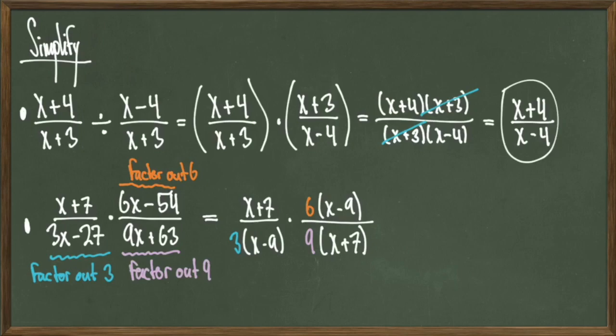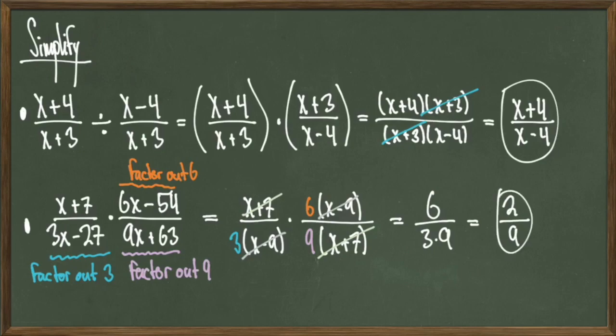My common terms are x minus 9 and x plus 7, so I can go ahead and cancel those terms out, which will give us 6 over 3 times 9, which simplifies down to 2 over 9, and we're done.